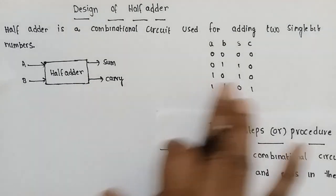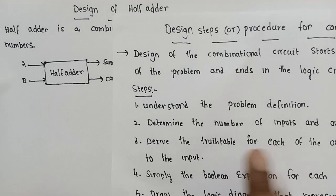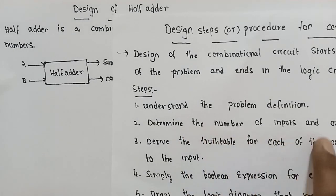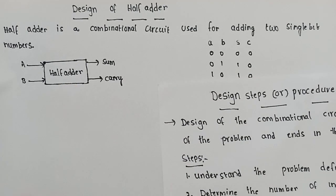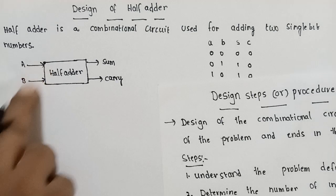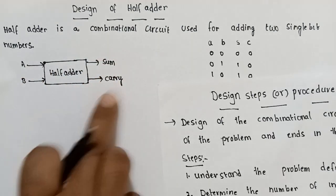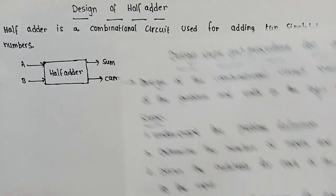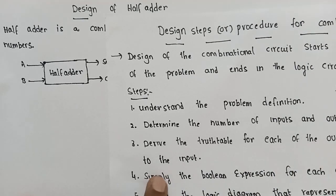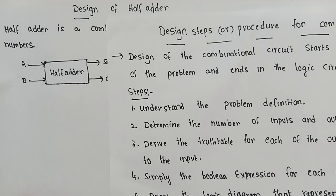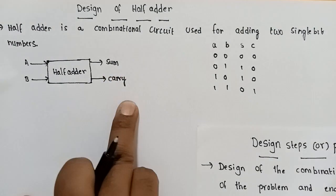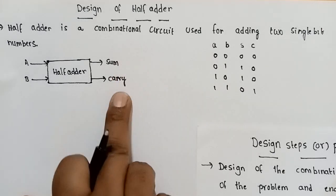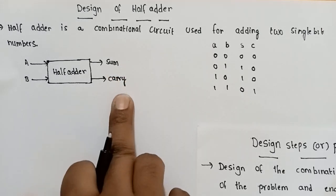The first step is to understand the problem. The second step is to determine the number of inputs and outputs. The next step is to derive the truth table for each output from the relationships of the inputs. There are two outputs used in the half adder circuit.